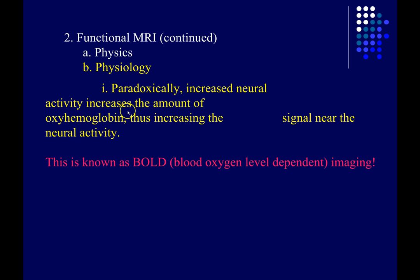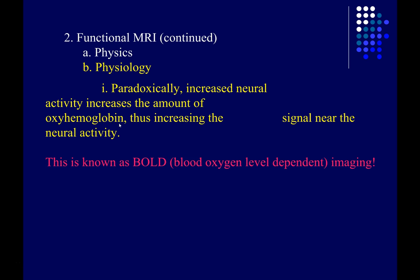Paradoxically, increasing brain activity — action potentials, post-synaptic activity — actually increases the amount of oxygenated hemoglobin. It's as if the blood vessels overcompensate: they open up and let in more oxygenated blood than those cells actually need. So you end up with more oxyhemoglobin in the most active parts of the brain, producing a brighter signal. This effect is known as the BOLD effect — blood oxygen level dependent imaging — and it's the basis for pretty much all functional MRI studies.